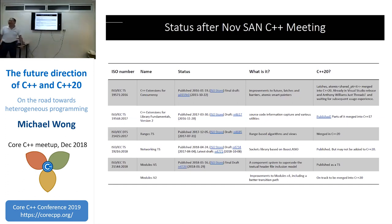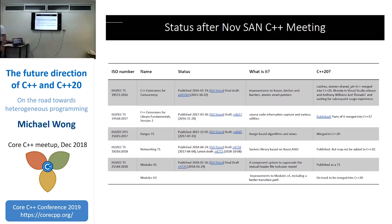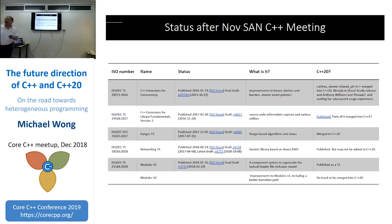Modules: we want them because they solve the constant recompilation and long compile time problem. Version one was based on the Microsoft inclusion model, which doesn't account for macros — it assumes you're not using legacy code. That was unsatisfactory for many people, so Google went and created modules version two, which allows a transition path for legacy code. We are now planning to merge a combined design into C++20 in the next meeting.